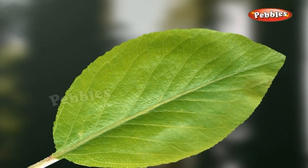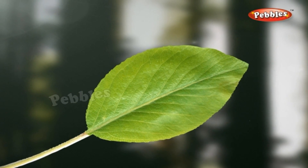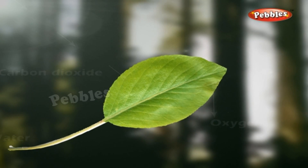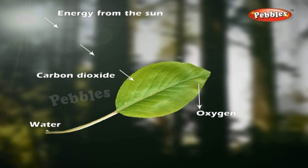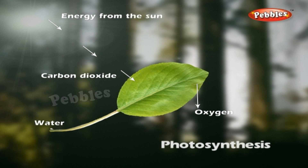Biotic component — Producers: Green plants make their own food from carbon dioxide and water, using the energy of sunlight. The green chlorophyll in the leaves captures the energy of sunlight. This process of making food is called photosynthesis. During this process, oxygen is given out into the atmosphere. Organisms that can make their own food are called producers, also called autotrophs — auto meaning self, and troph meaning food.